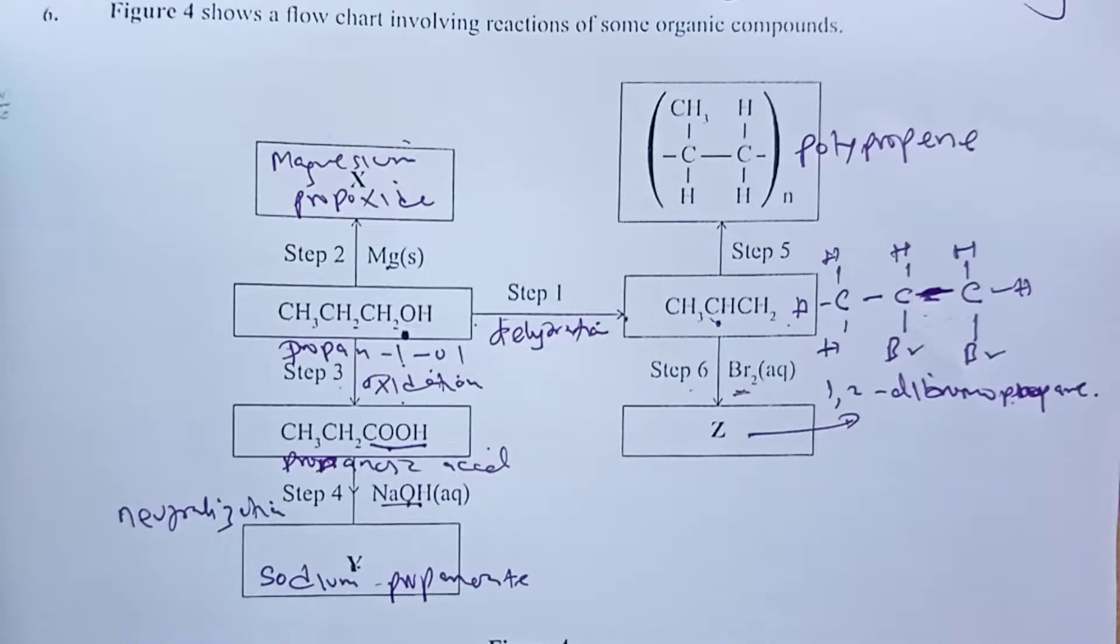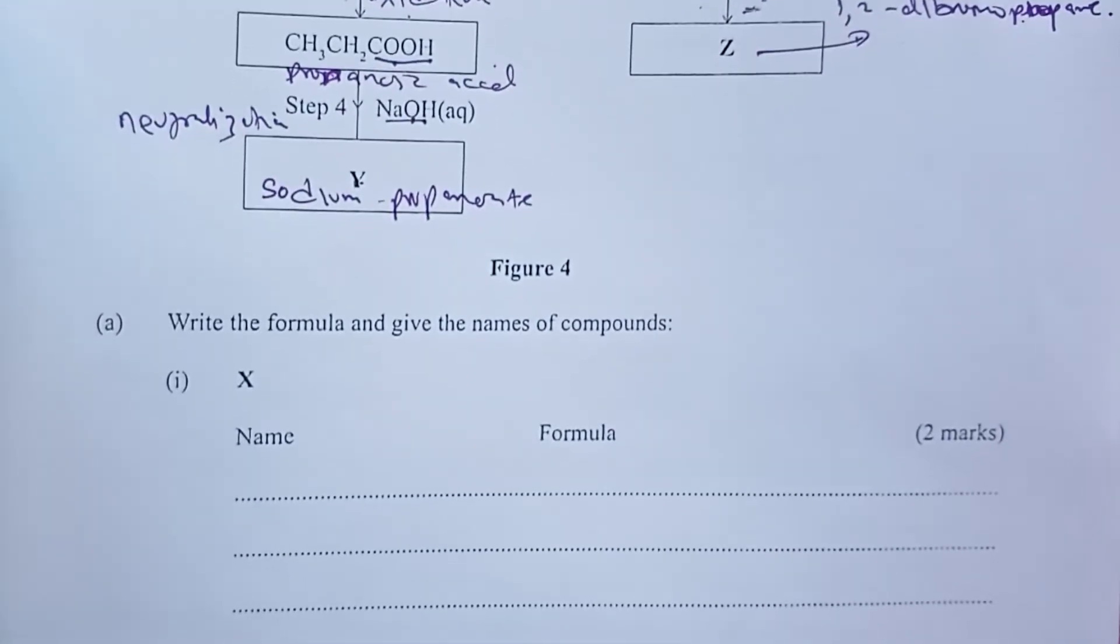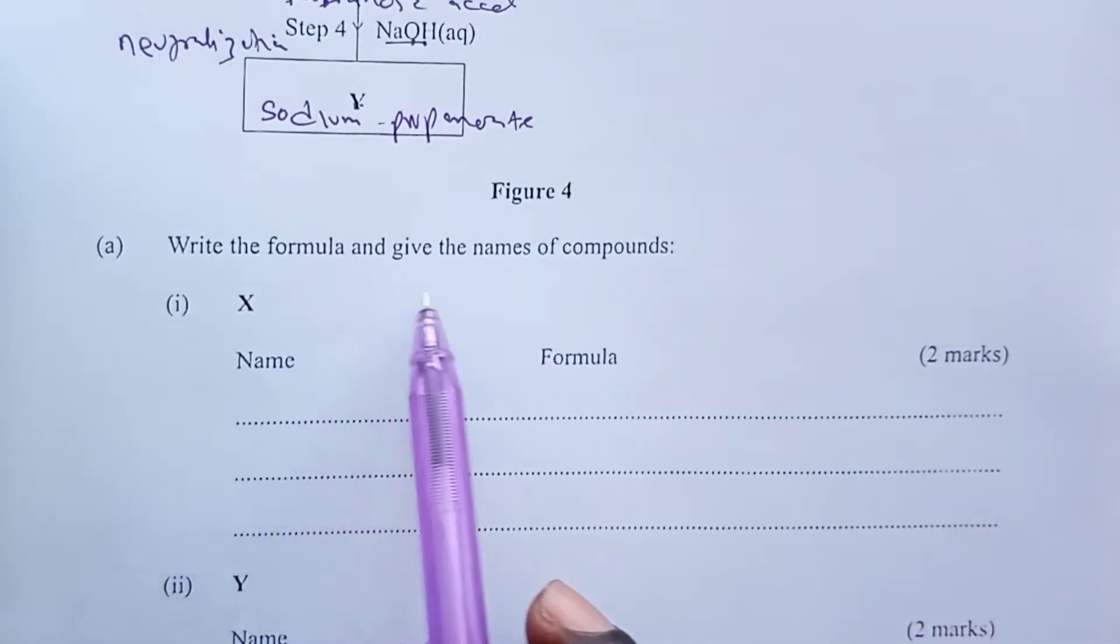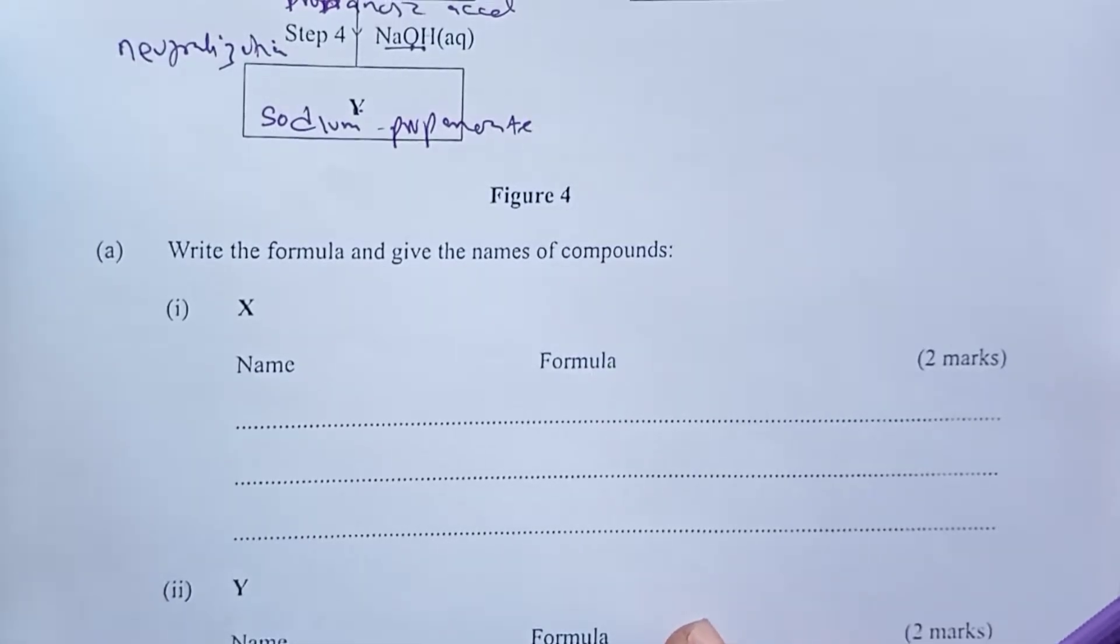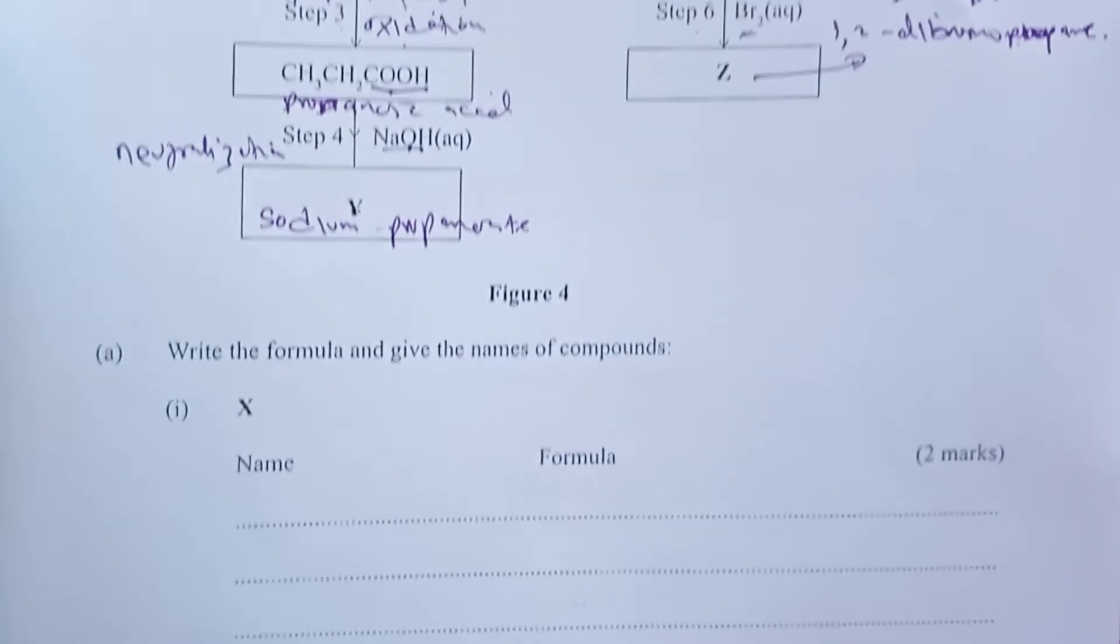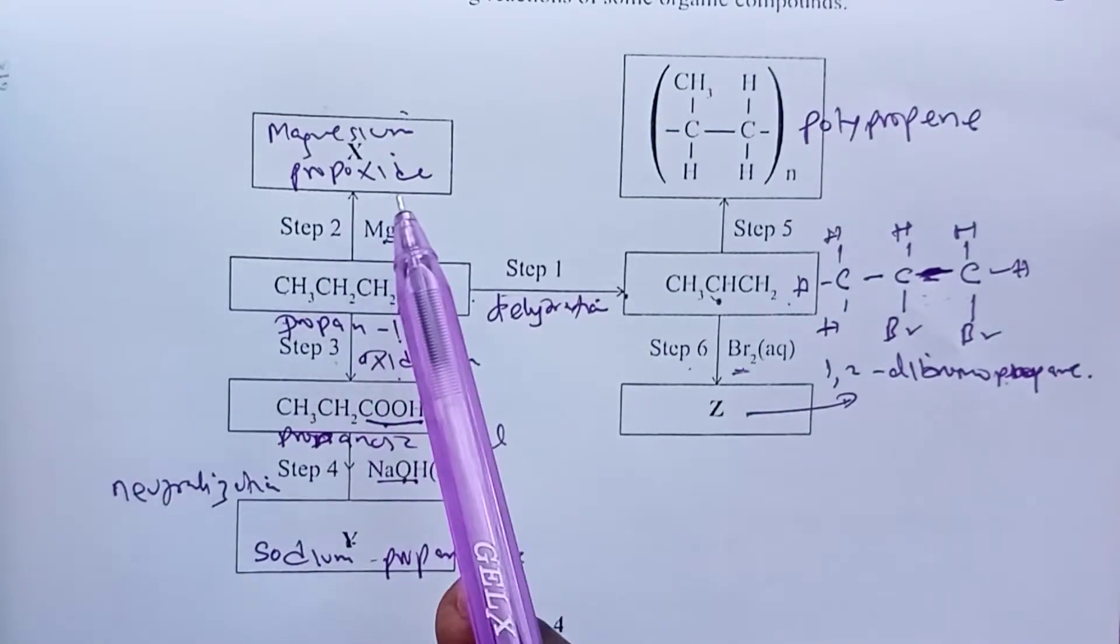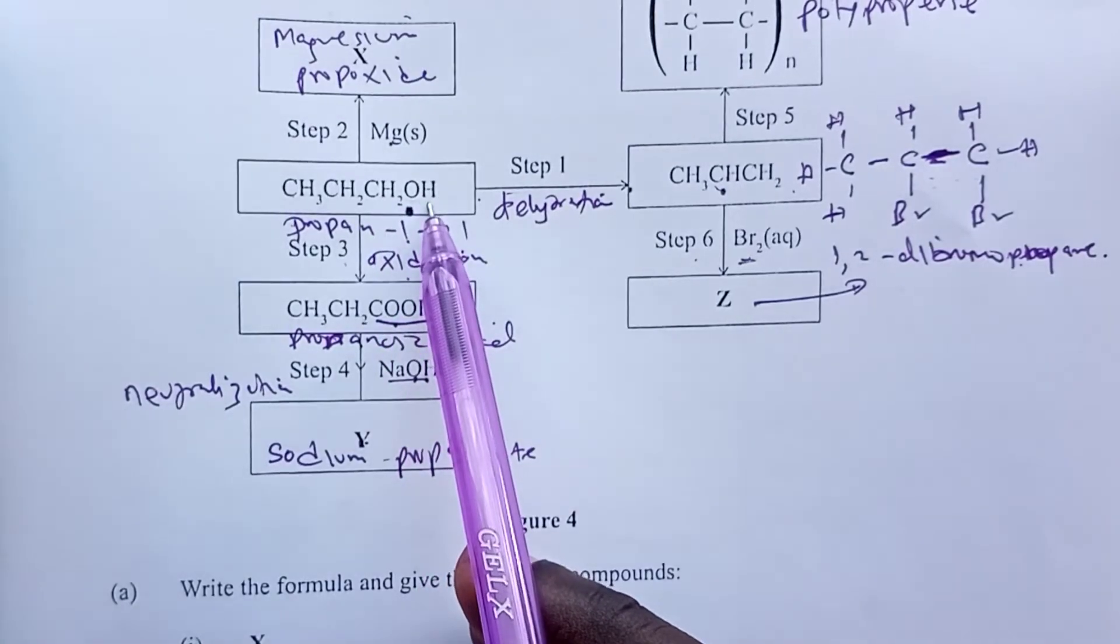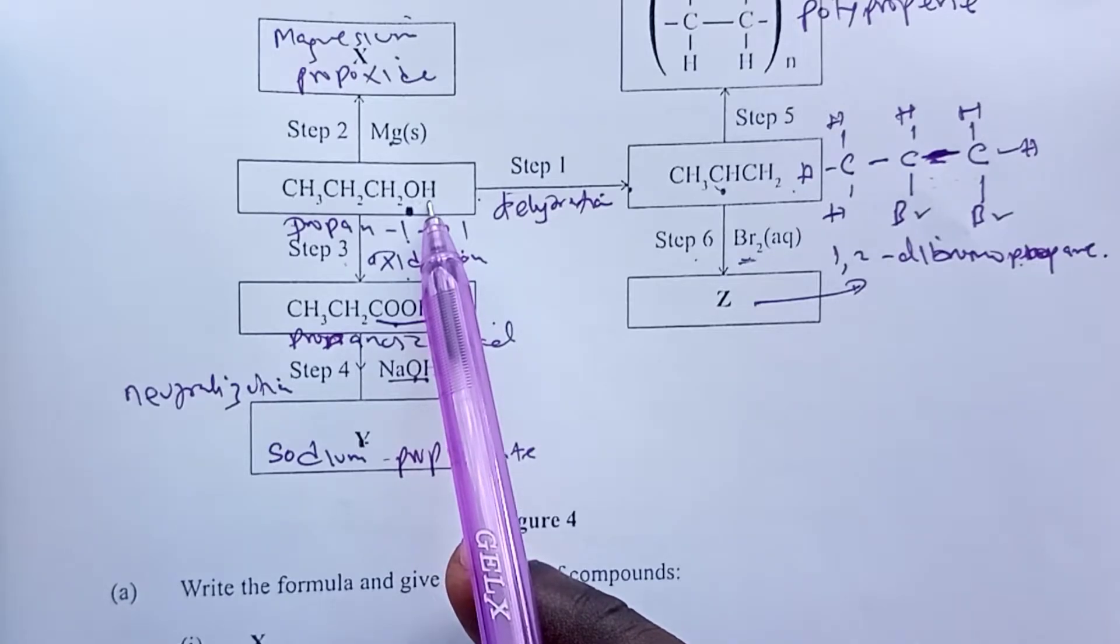We have studied our scheme very well. We now want to get down to answering our questions. So part (a): write the formula and give the names of compounds X. Moving up, let's see what X was. X is magnesium propoxide.